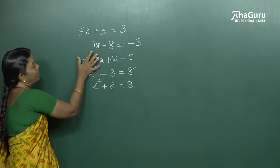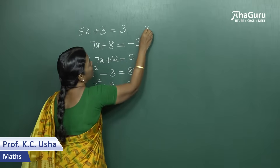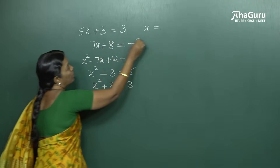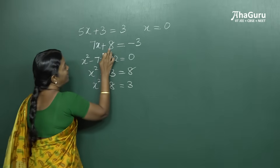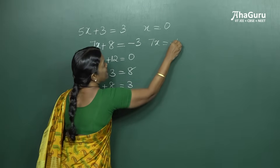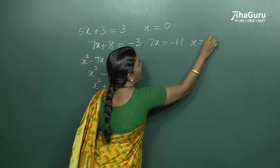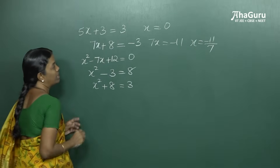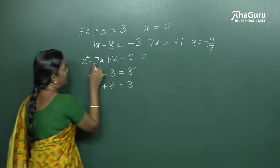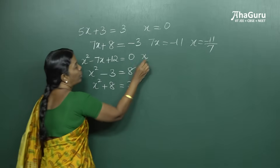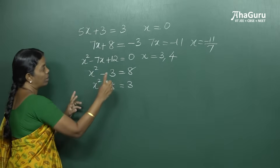We have written down some equations and we are going to see the solution for these equations. The first equation: 5x = 0, so x = 0. The second equation: 7x becomes minus 11, so x = minus 11 divided by 7, which is a rational number. For the third equation, if you factorize you get (x minus 3)(x minus 4), so the solution is either x = 3 or x = 4.